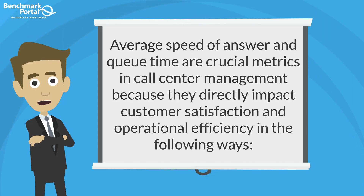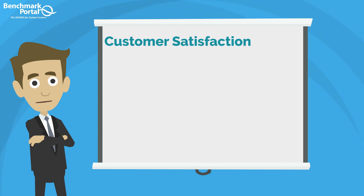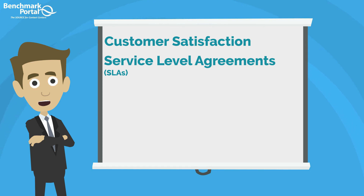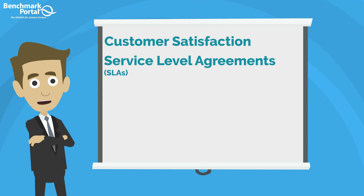Average speed of answer and queue time are crucial metrics in call center management because they directly impact customer satisfaction and operational efficiency. When customers call, they generally expect quick and efficient service. Long queue times and a high average speed of answer can lead to frustration, dissatisfaction, abandoned calls, a negative impression of the company, or in worst cases, lost customers. Many call centers have specific SLAs that define target times for answering calls, and failing to meet these can result in penalties, financial repercussions, or even the loss of contracts with clients.